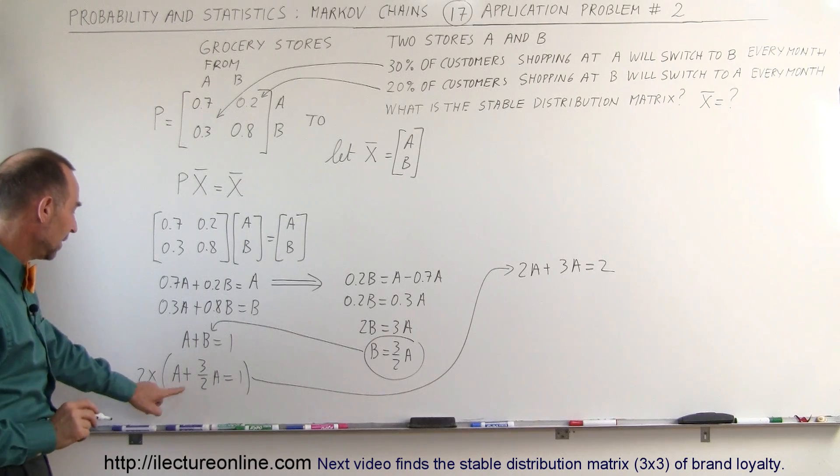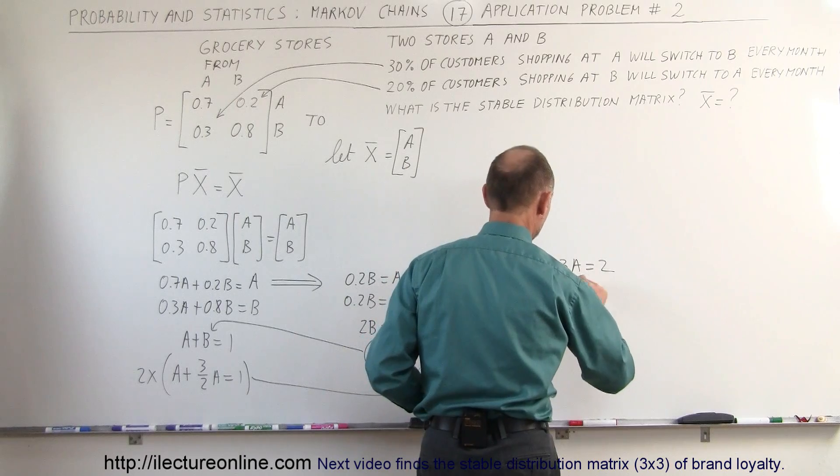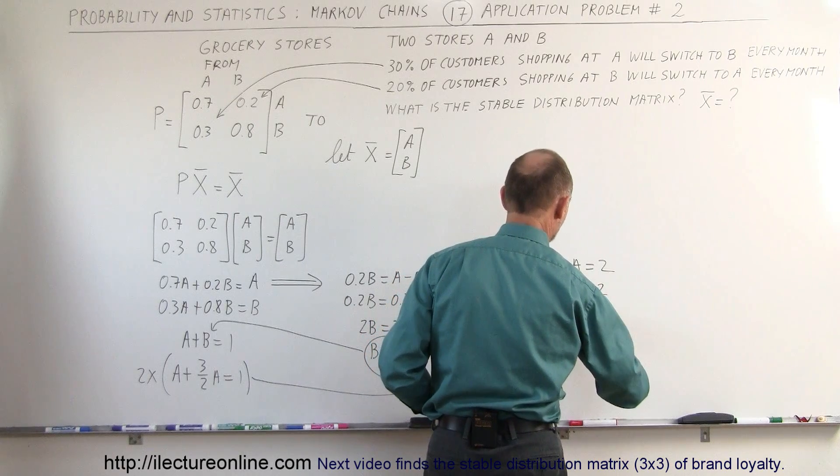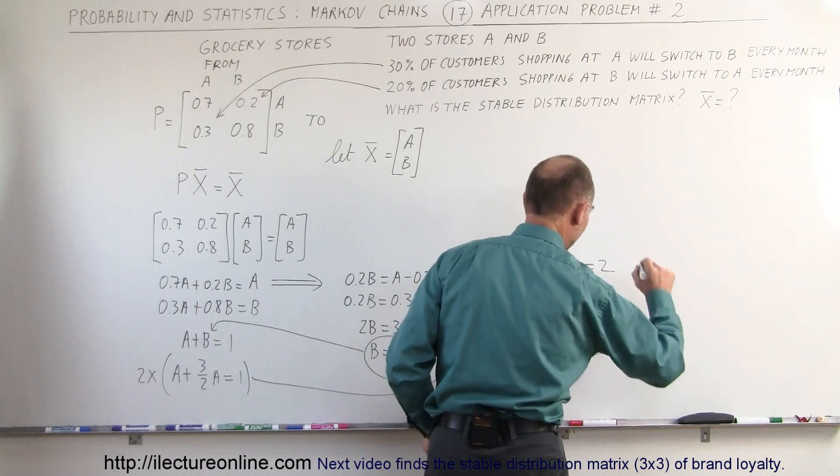We got 2A, the 2s cancel out, plus 3A equals 2. Combine the A's together we get 5A equals 2, or A is equal to 2 divided by 5. So now I know my final state for A, for store A.